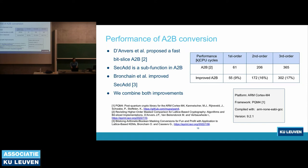D'Anvers et al. proposed a fast bit-slice A2B conversion, where bit-slice techniques are used to make the masking algorithm faster. Brent et al. improved the secure add sub-function used in A2B conversion. In our work, we combined both of these results and achieved improvements: almost 9% for first-order, 16% for second-order. These are performed on the ARM Cortex-M4 platform using the PQM4 framework — a post-quantum crypto library for Cortex-M4 — compiled with arm-none-eabi-gcc version 9.2.1.